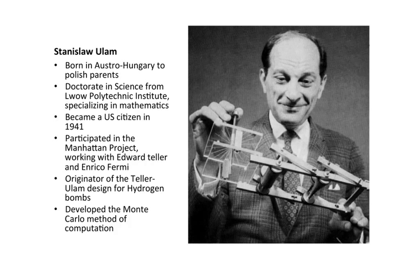The mathematical obstacles to the development of the hydrogen bomb were considerable. The calculations required the largest math effort ever undertaken at that time, with Ulam and another scientist working out simplified versions of the necessary calculations by hand using a slide rule, paper, and pencils. They did make use of the ENIAC, the world's first electronic computer, during the project, but most of the calculations were done by hand.